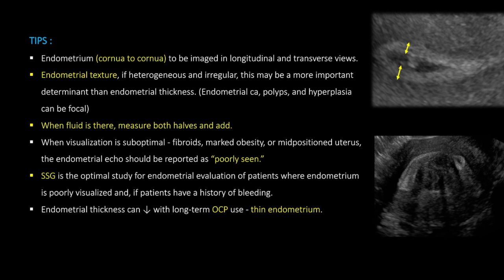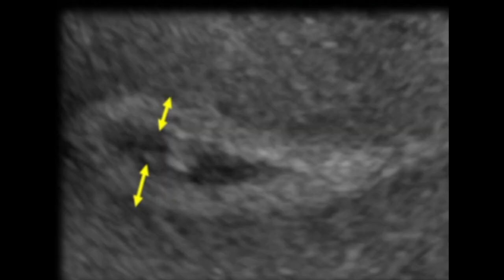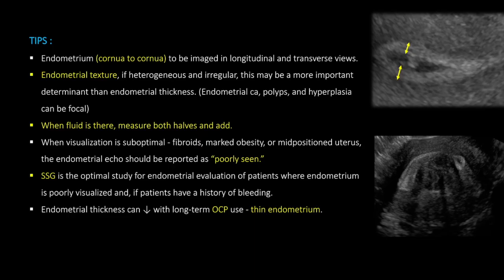When there is fluid in the canal, we do not measure it as part of endometrial thickness. Instead, we measure each layer of the endometrium separately and add them — as seen on the right side of the screen, if there is minimal fluid in the canal, we measure the anterior and posterior lining separately and add them; two millimeters plus two millimeters gives four millimeters total. If due to fibroids, obesity, or uterine position we cannot see the endometrium properly, we should state that it is poorly seen, rather than reporting a potentially false normal measurement.